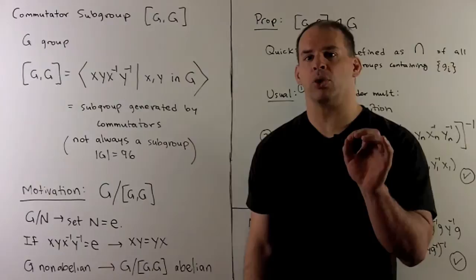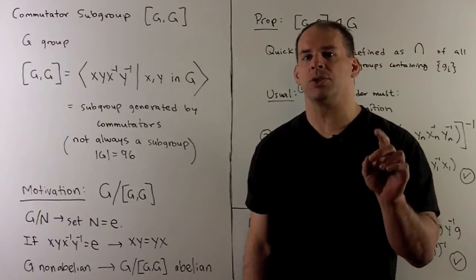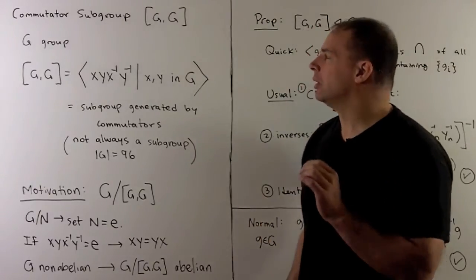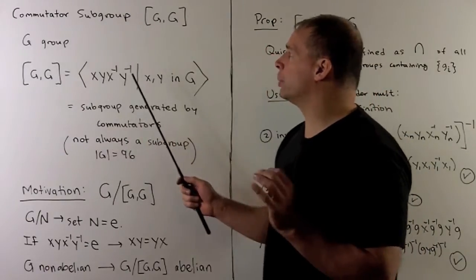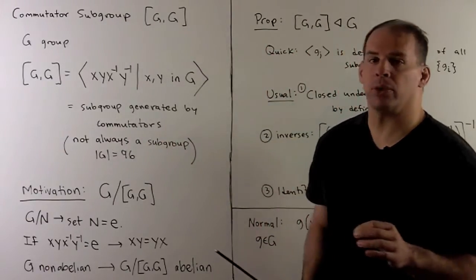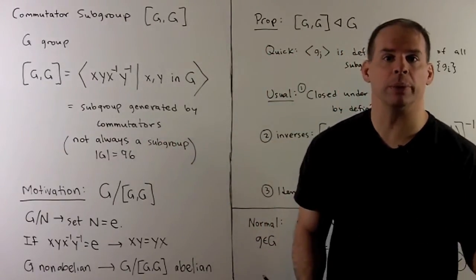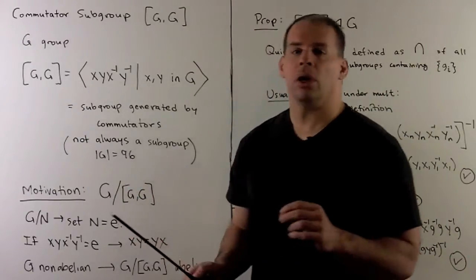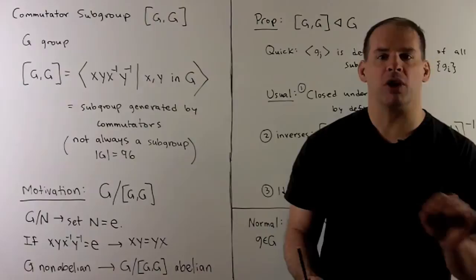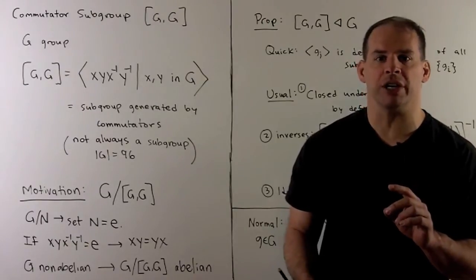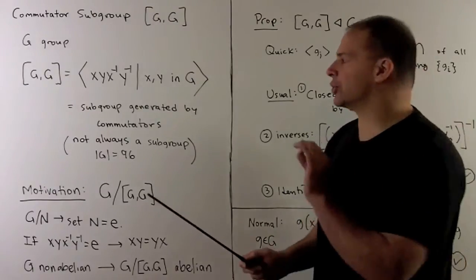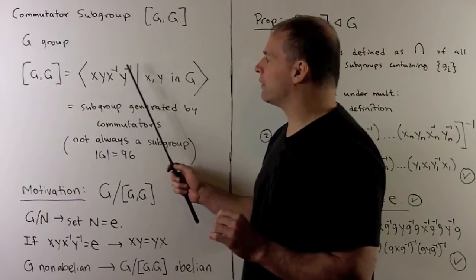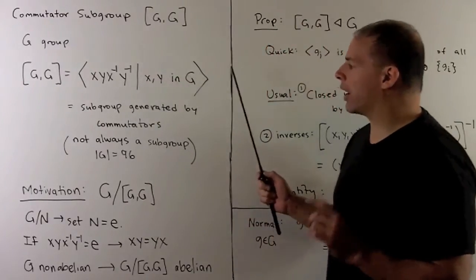For another special subgroup to add to our constructions of new groups from old groups, we have the commutator subgroup G bracket with G, where G is a group. We define the commutator subgroup as the subgroup generated by all commutators of G. The commutators are elements of the form x, y, x inverse, y inverse, where x and y are in G.